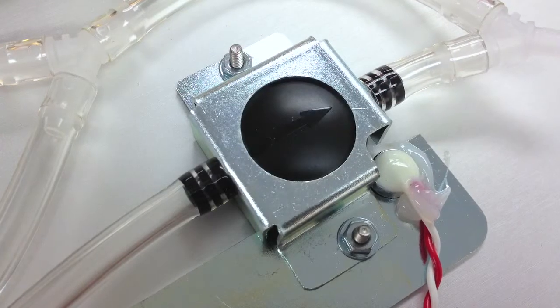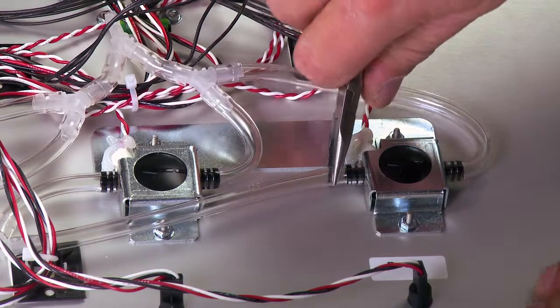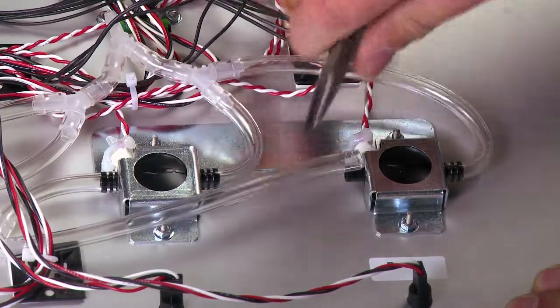Should a calibration cup become damaged, it will need to be replaced. Start by removing the tubing from their connections on the underside of the main panel assembly.